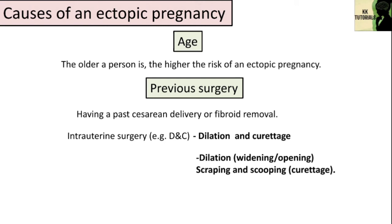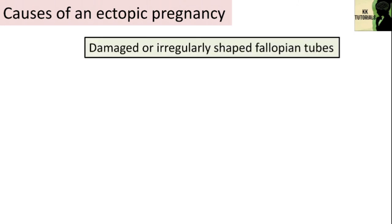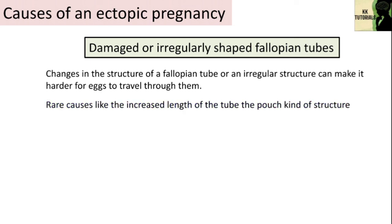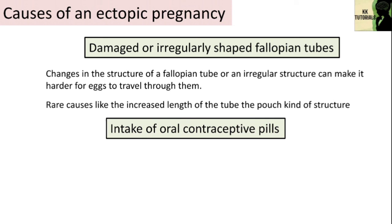D&C can also be used to diagnose the cause of post-menopausal bleeding, such as in the case of endometrial cancer. Damaged or irregularly shaped fallopian tubes are another risk factor — changes in the structure of a fallopian tube can make it harder for eggs to travel through them, increasing the risk of the embryo implanting outside the womb. Rare causes include increased tube length or pouch-like structures built in the tube. Intake of oral contraceptive pills within 72 hours without doctor supervision can also lead to ectopic pregnancy.